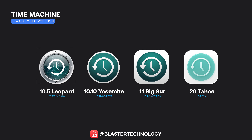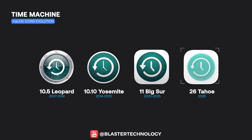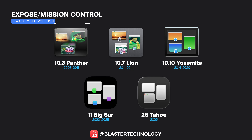The Time Machine icon debuted with a mechanical, highly detailed look in the Leopard release, was simplified with Yosemite, and starting with Big Sur adopted the modern square shape, later refined in the Tahoe version.